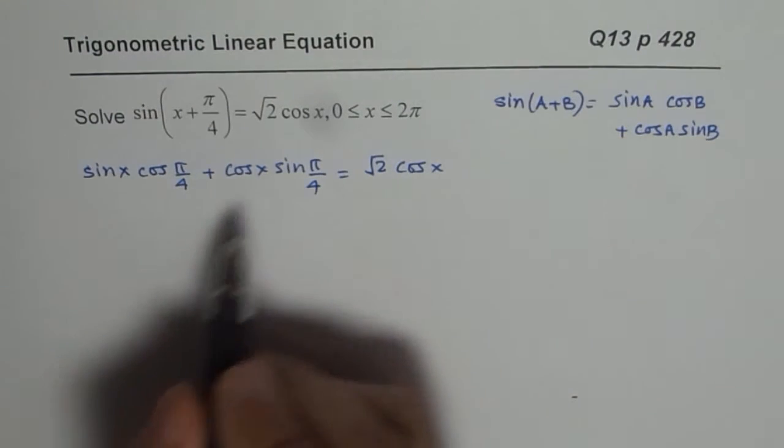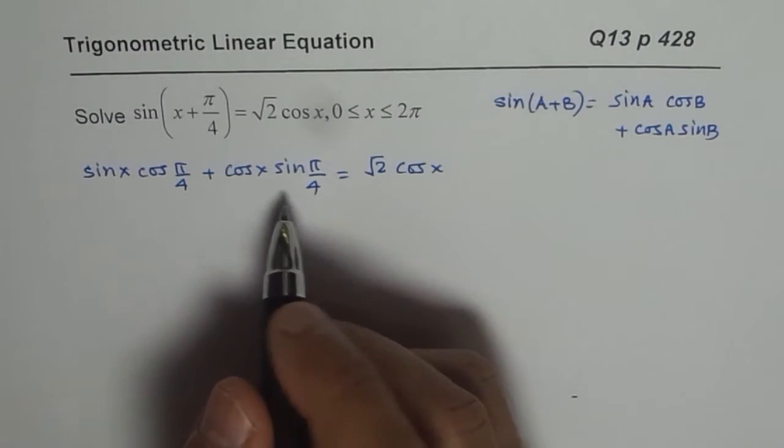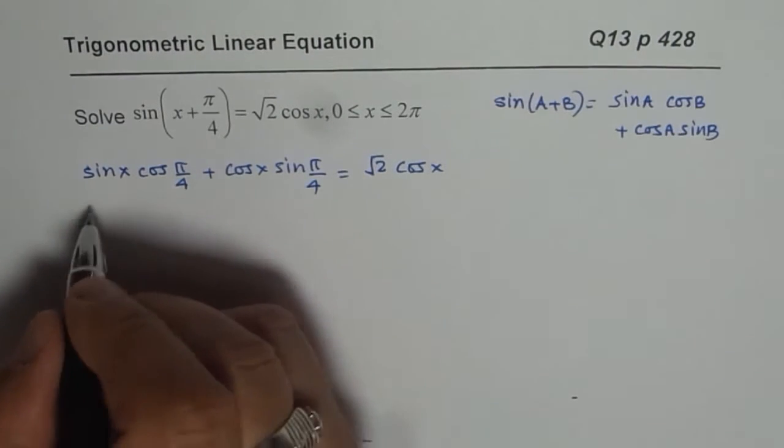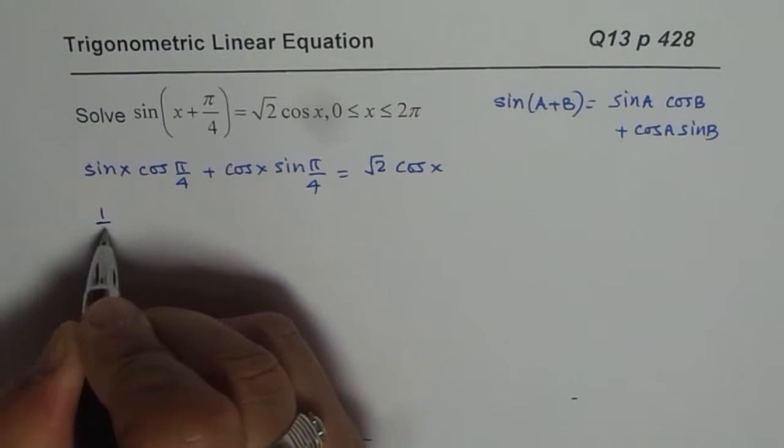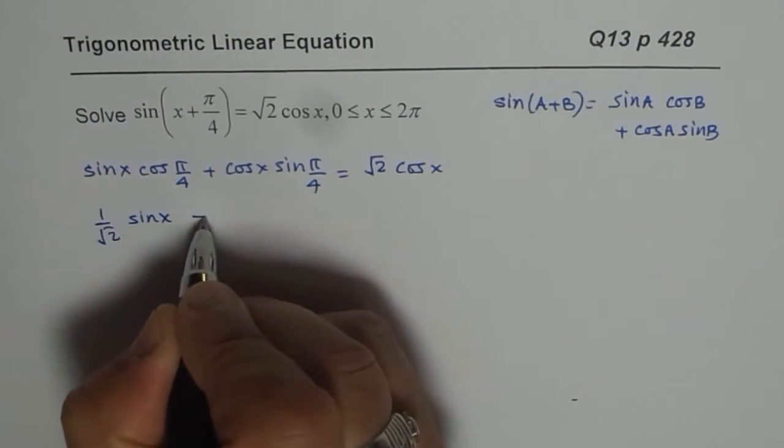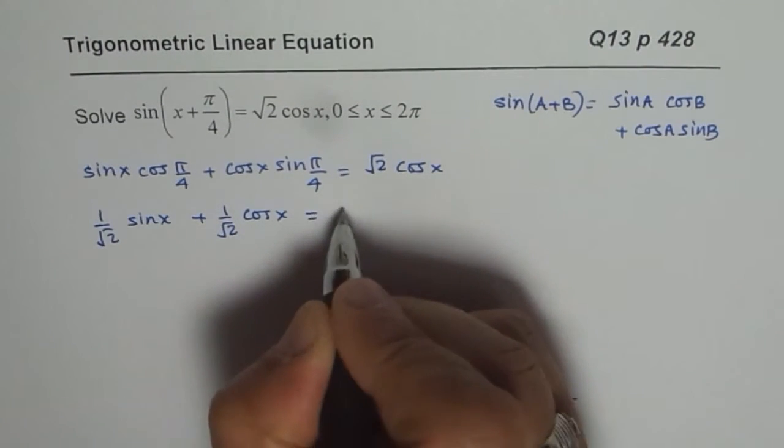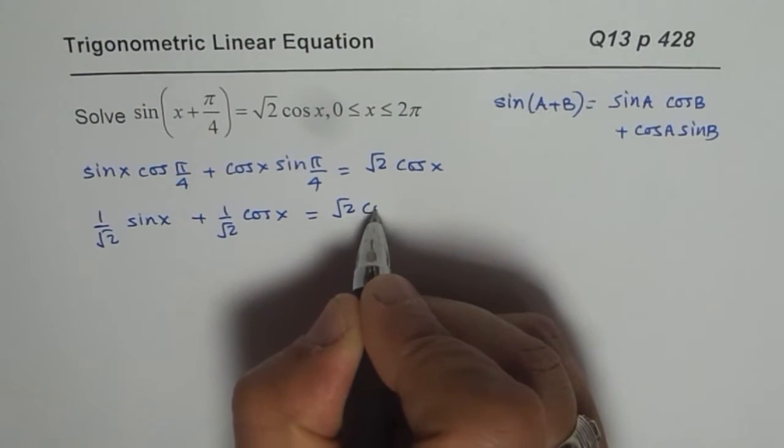Now what is cos(π/4) and sin(π/4)? It is 1/√2. So we get (1/√2)sin x + (1/√2)cos x = √2 cos x.